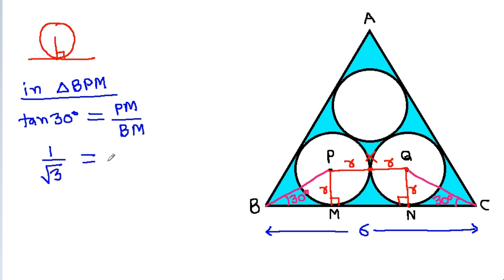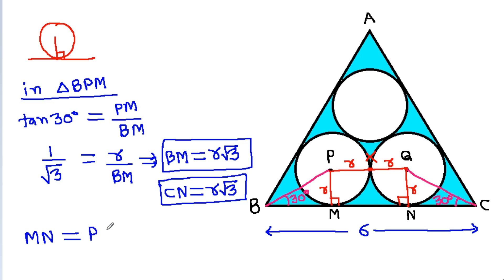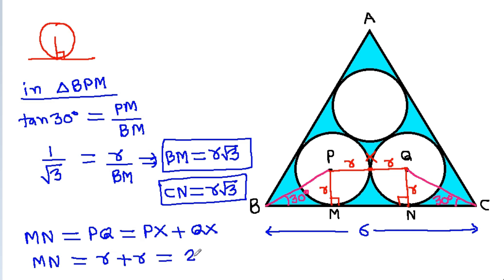So radius over BM equals 1 over √3, which gives BM equals R√3. Similarly, CN equals R√3. And MN equals PQ, and PQ equals PX plus QX, which is 2R.